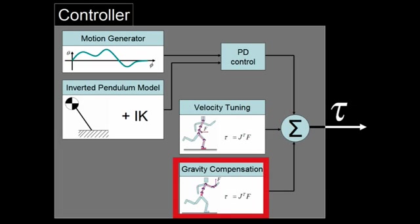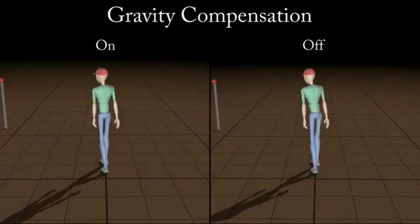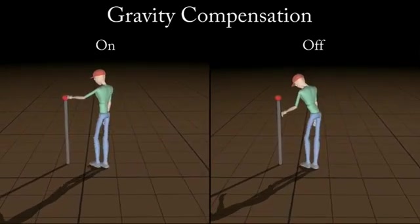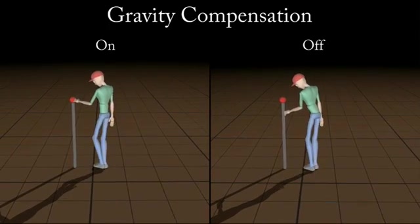Finally, gravity compensation computes the torque required at each joint to counteract gravity, making it possible to use low PD gains and obtain compliant-looking motions.